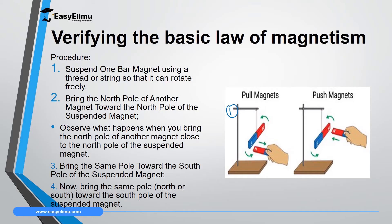Then, you bring the north pole of the magnet you are holding close to the south pole of the magnet that is hanging and swinging freely, and observe what happens. Next, bring that same north pole close to the north pole of the hanging magnet and note what you observe. Then repeat with the south pole — bring it close to the south pole of the hanging magnet and observe what happens.